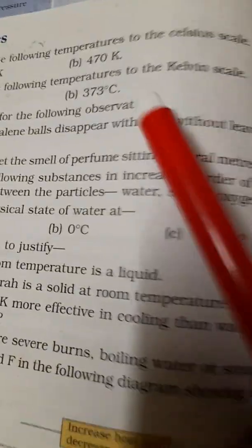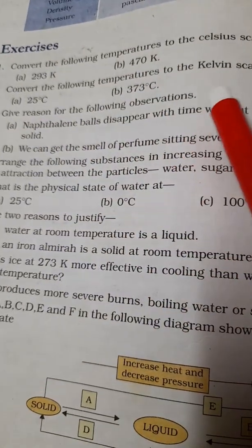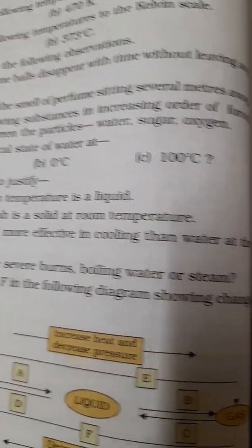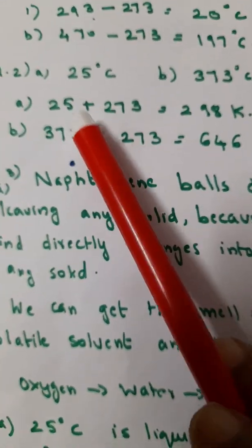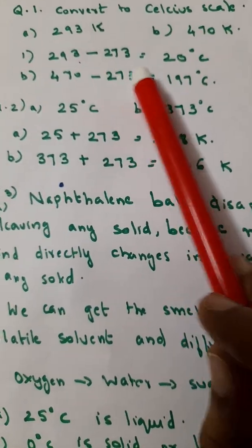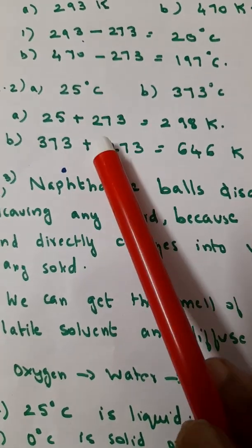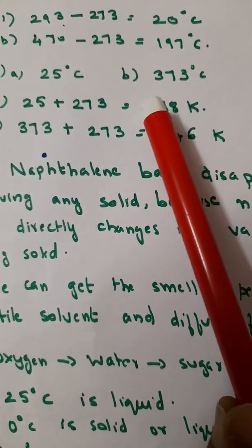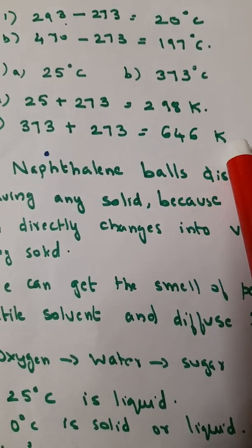Now second question is convert the following temperatures to Kelvin scale: 25 degrees Celsius, 373 degrees Celsius. Just you have to add. When you convert to Celsius subtract, then 25 degrees Celsius add 273, 373 also add 273: 298 Kelvin here, 646 Kelvin here.